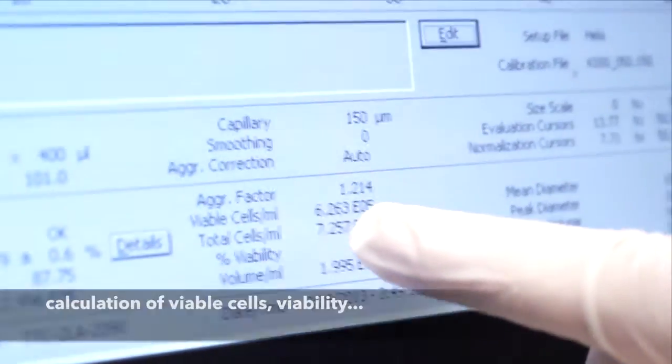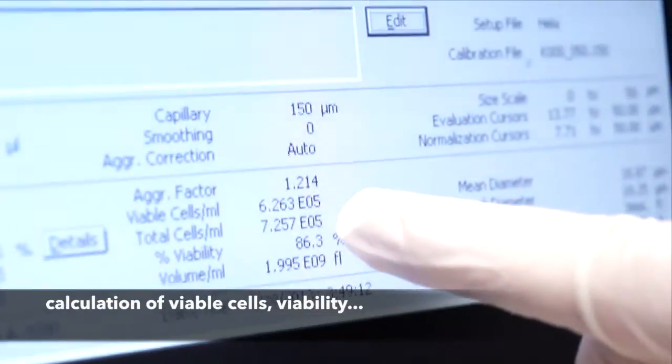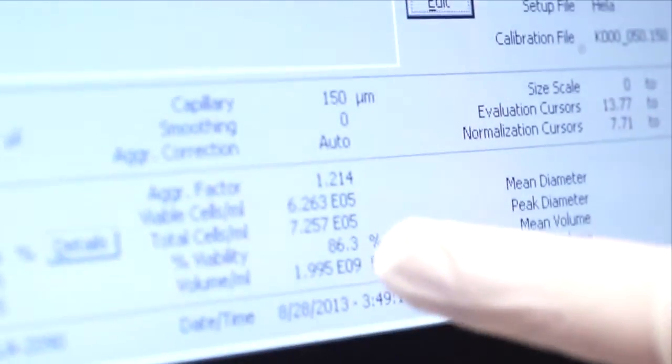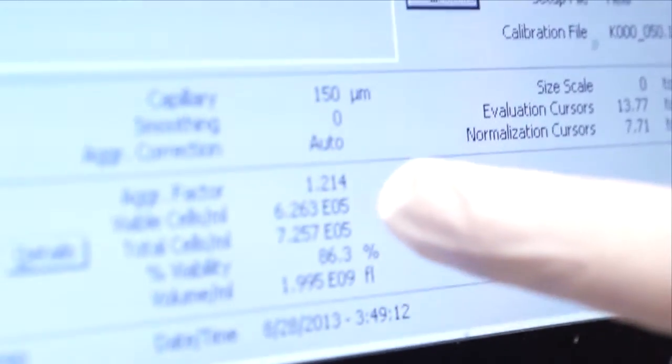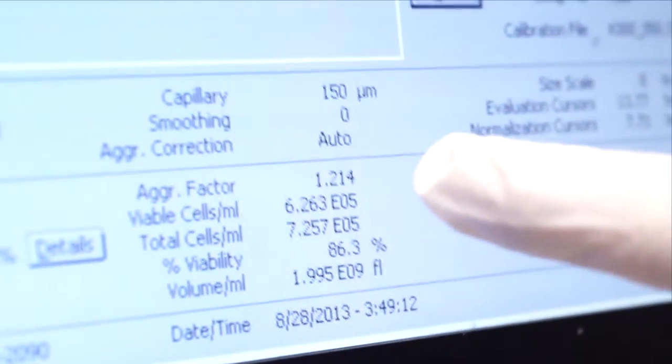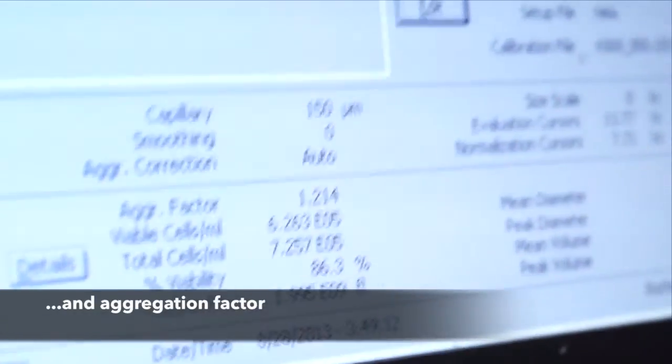From these results, the vital cell number is calculated to be 6.26 times 10 to the power of 5. This equals a vitality of 86.3% and an aggregation factor of 1.214.